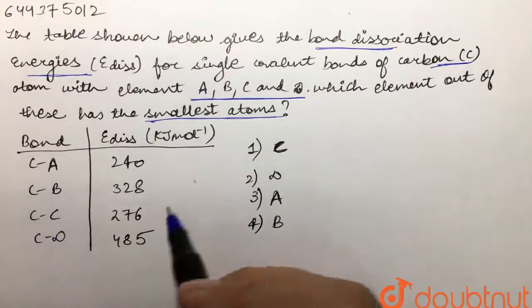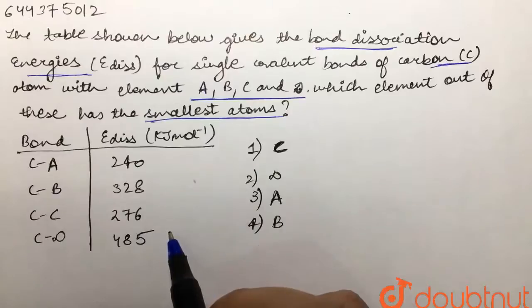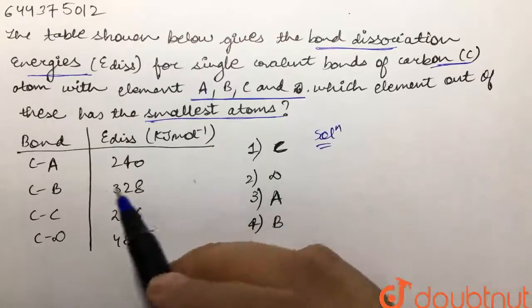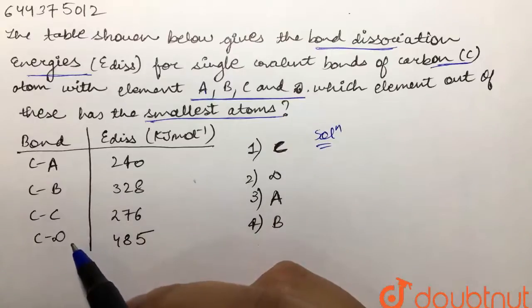making with A, B, C and D, and these are the bond dissociation energies given to us. So we are supposed to tell which of the following atom A, B, C or D is the smallest atom.